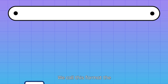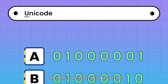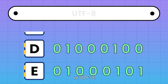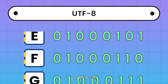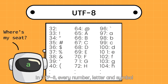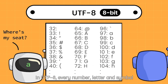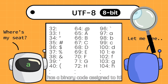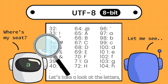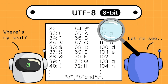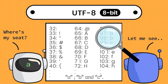We call this format the Unicode Transformation Format, or UTF-8. In UTF-8, every number, letter, and symbol has a binary code assigned to it. Let's take a look at the letters A, B, and C.